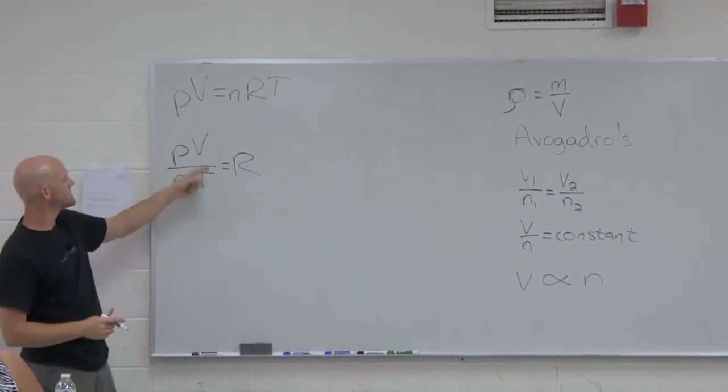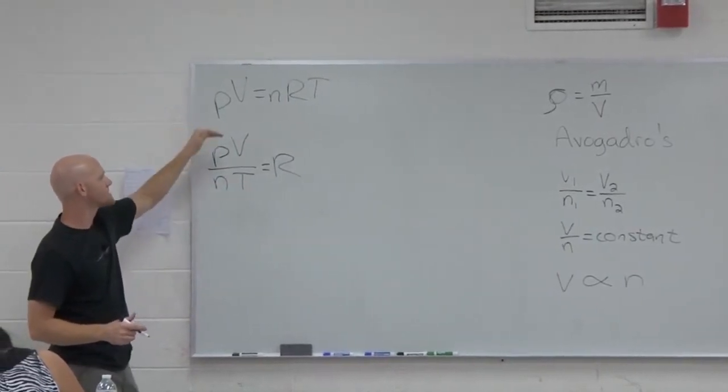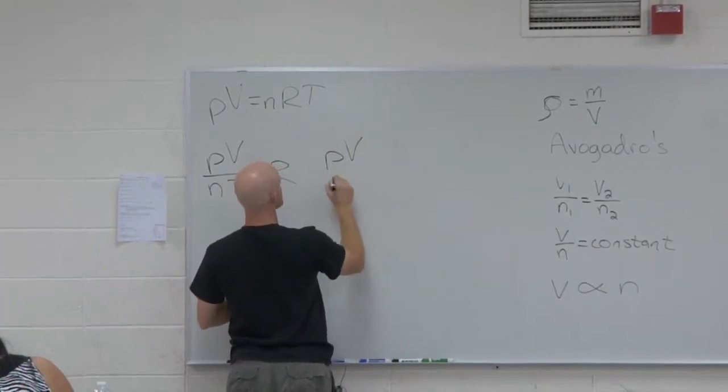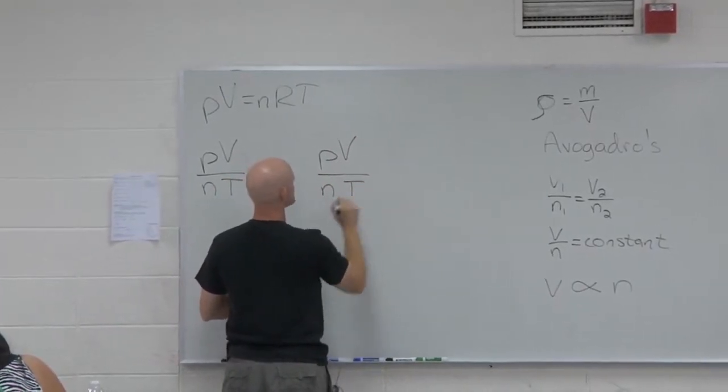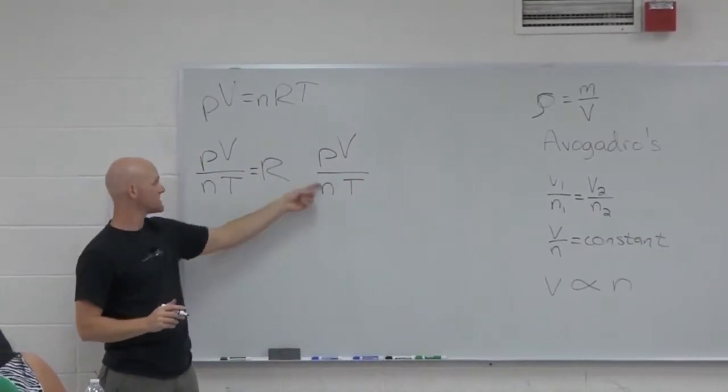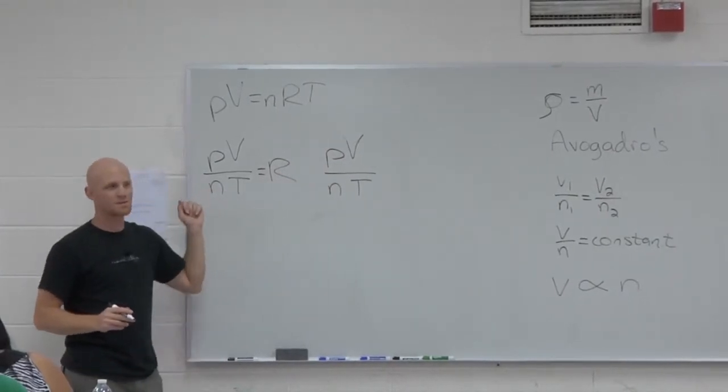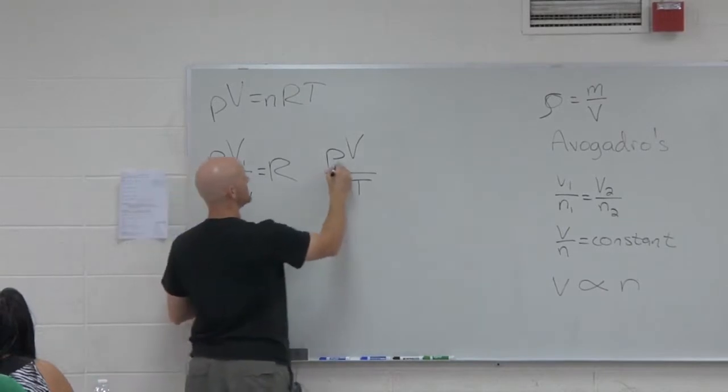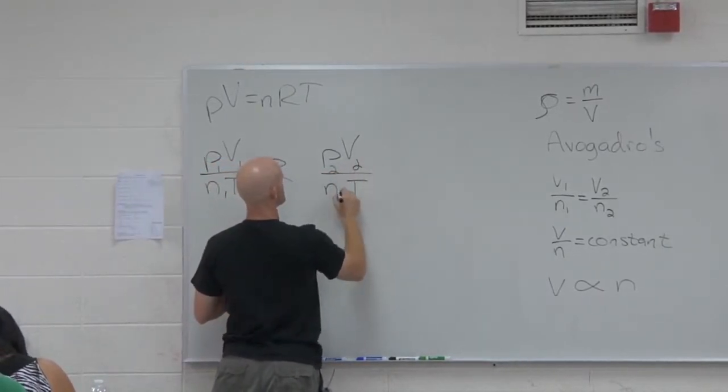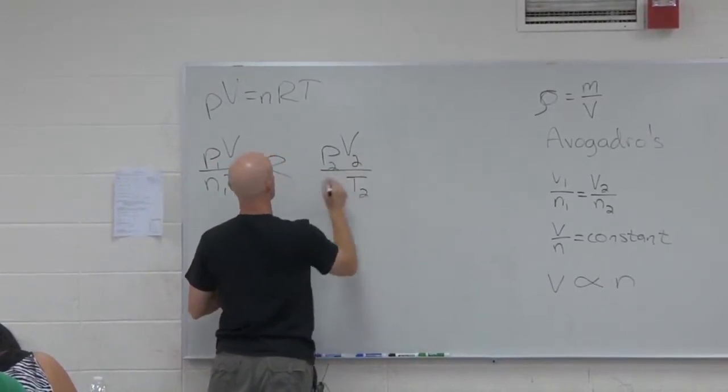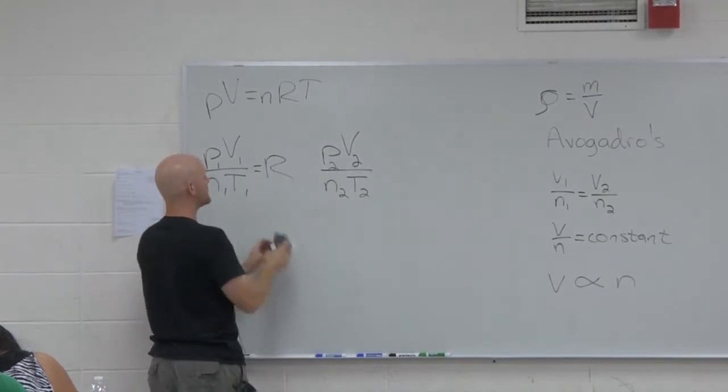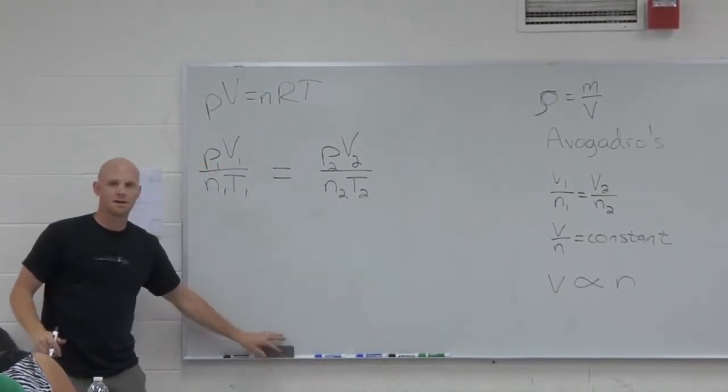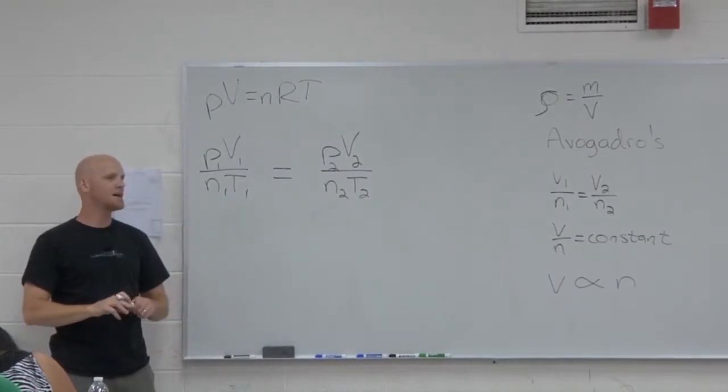And so if I have all these conditions of a gas - how many moles, pressure, volume, and temperature - and I change some of them to some new pressure, volume, maybe even change the moles of gas and change the temperature. What should this ratio still come out to, though? It's still equal to R. So P1 V1 over n1 T2 would equal P2 V2 over n2 T2. So because they're both equal to R, they're equal to each other. And that's pretty much the combined gas law.